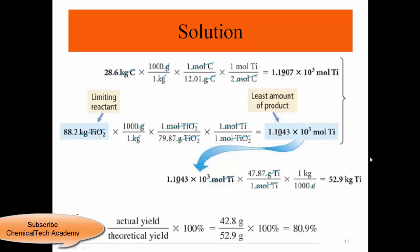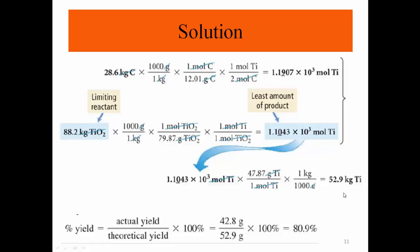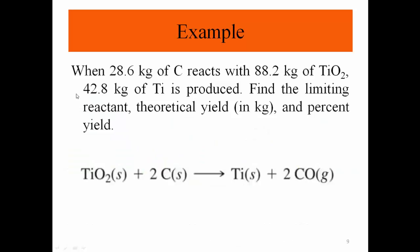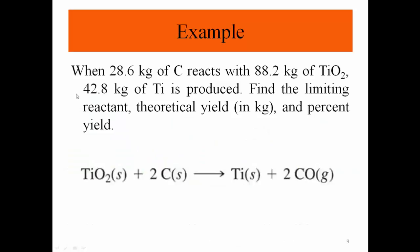Based on TiO₂ as the limiting reactant, the theoretical yield is 52.9 kilograms of titanium — the amount produced if yield were 100%. In reality, yield is less than 100%. Using the equation: percent yield = (actual yield / theoretical yield) × 100%, with actual yield 42.8 kg and theoretical yield 52.9 kg, the percent yield is 80.9%.